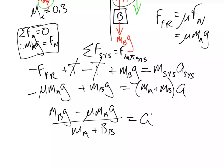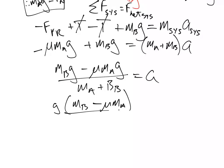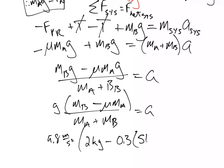Now that we have A, we can do a little bit more factorization, by the way. We can factor out a g and go MB minus mu MA divided by MA plus MB. And let's do the calculation for that. So that's 9.8 meters per second squared times MB, which was 2 minus 0.3 times 5 divided by 2 plus 5 is 7.